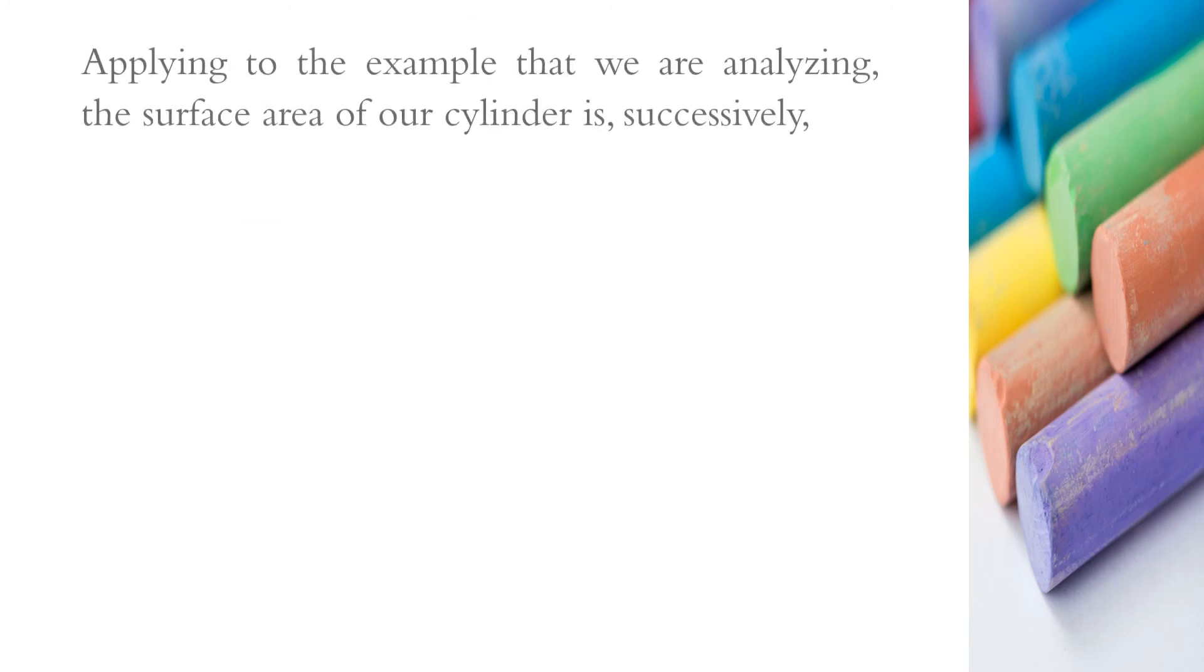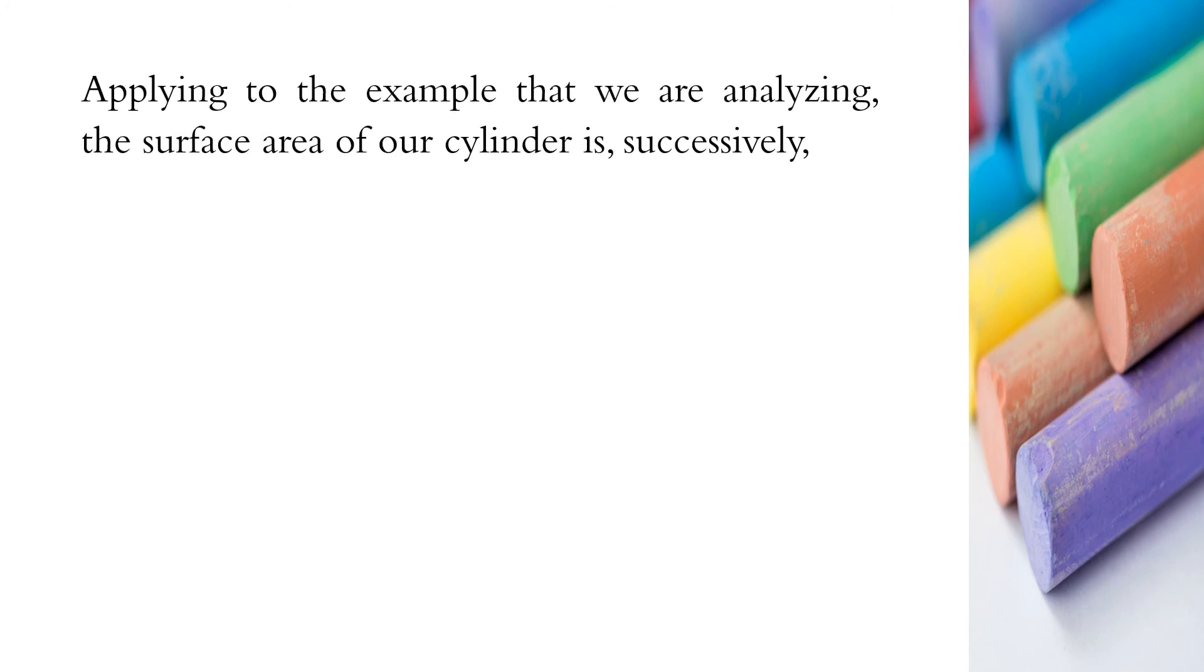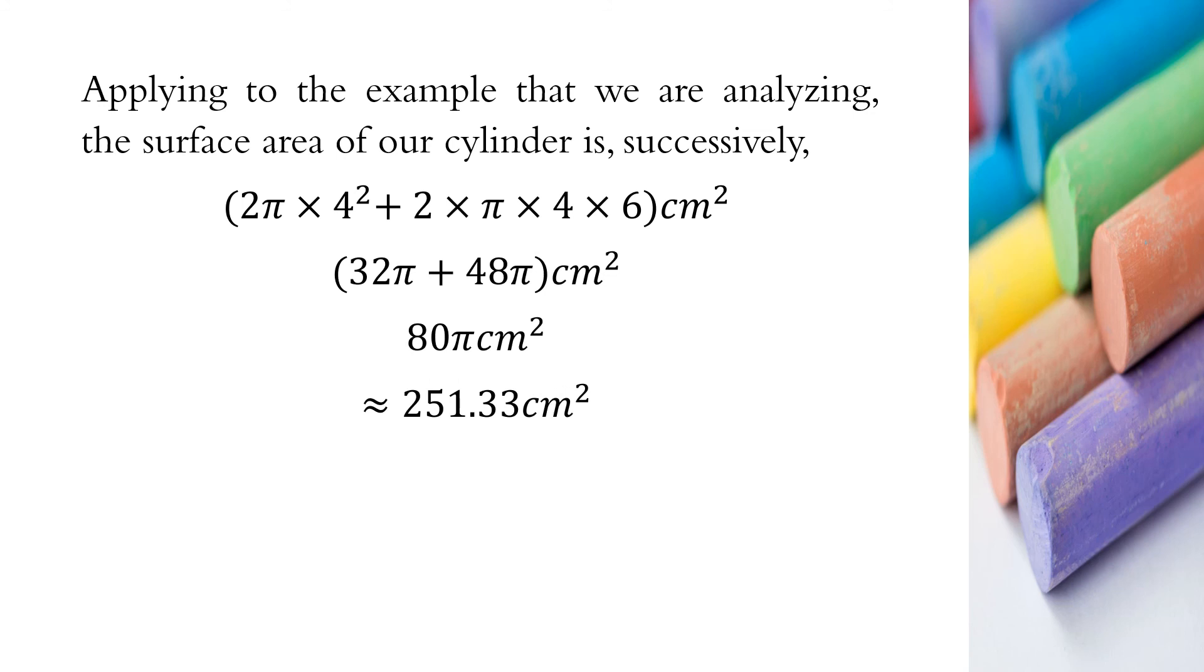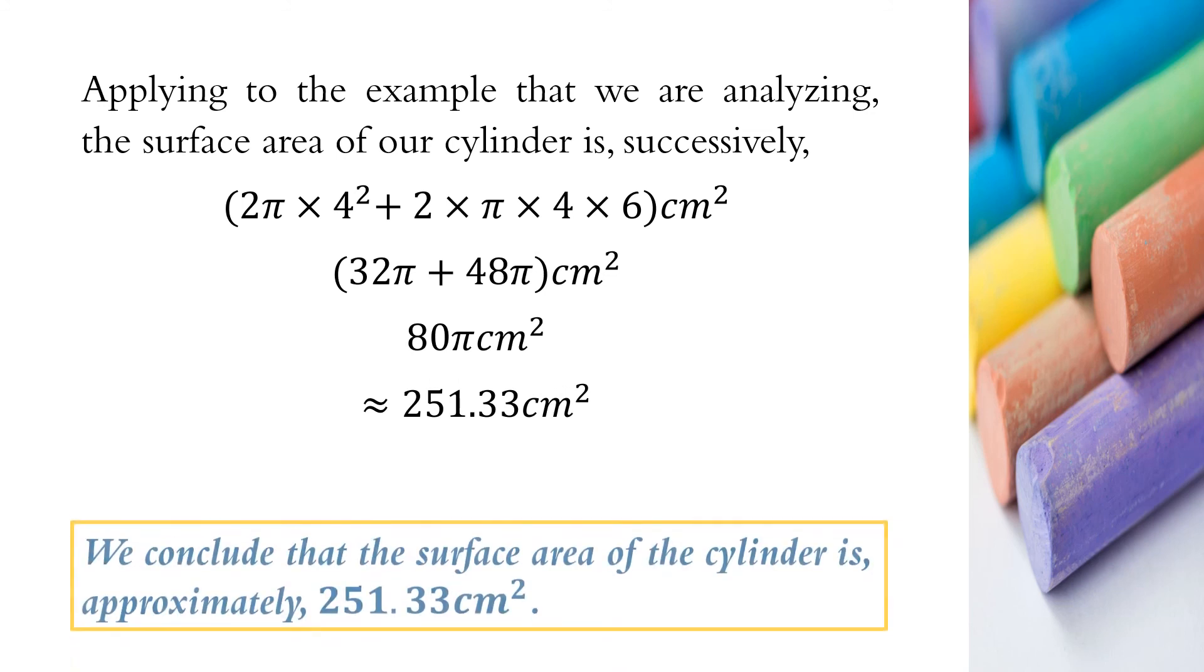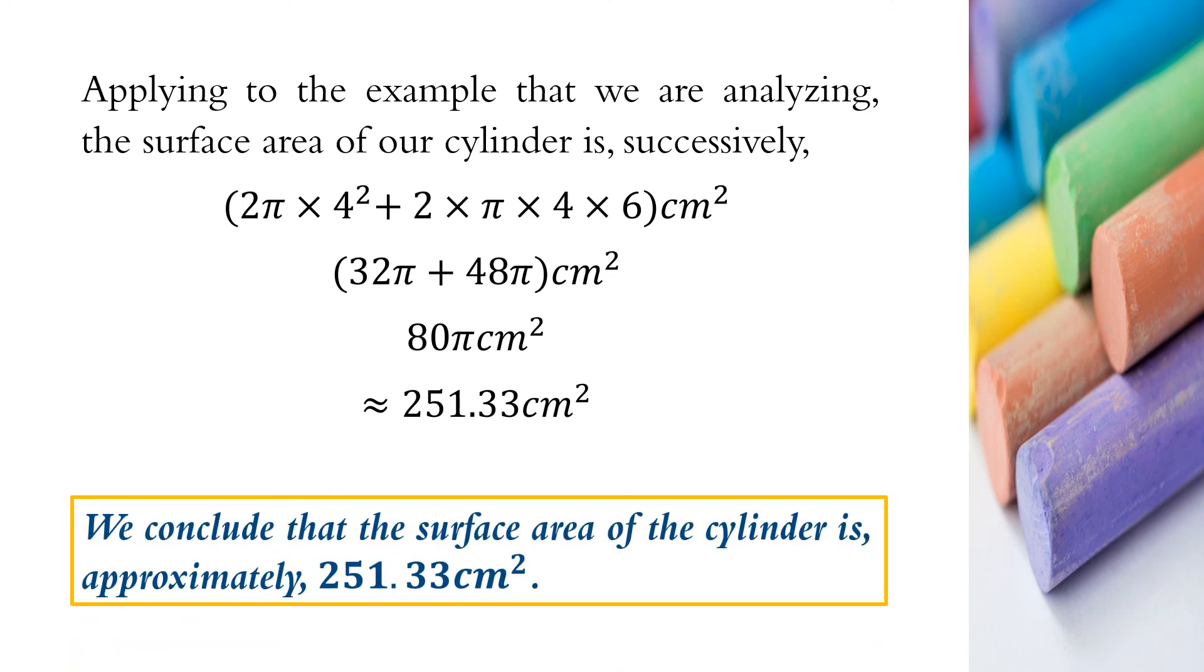Applying to the example that we are analyzing, the surface area of our cylinder is successively (2π × 4² + 2 × π × 4 × 6)cm², (32π + 48π)cm², 80πcm², approximately 251.33 square centimeter. We conclude that the surface area of the cylinder is approximately 251.33 square centimeter.